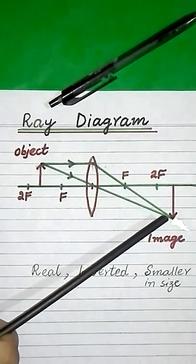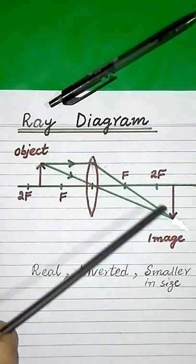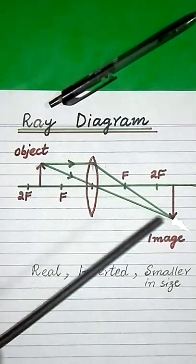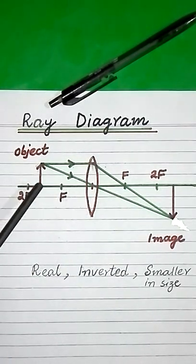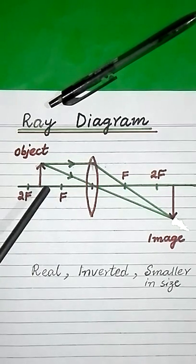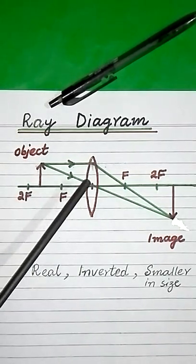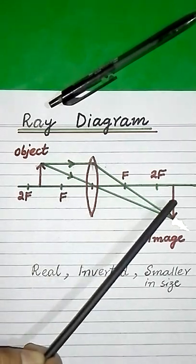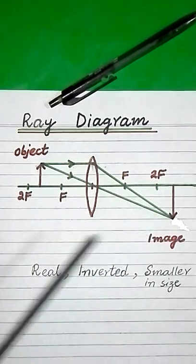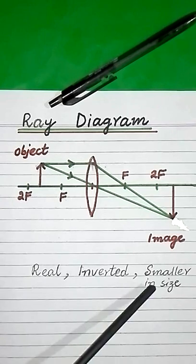Now both rays meet each other and we get image of object beyond 2f. It means students if an object is placed in front of a convex lens between 2f and f, then after refraction its image is formed beyond 2f. This image is real, inverted and smaller in size.